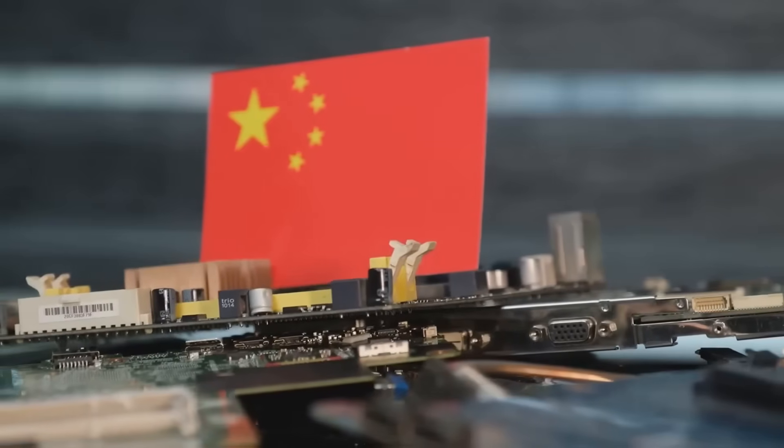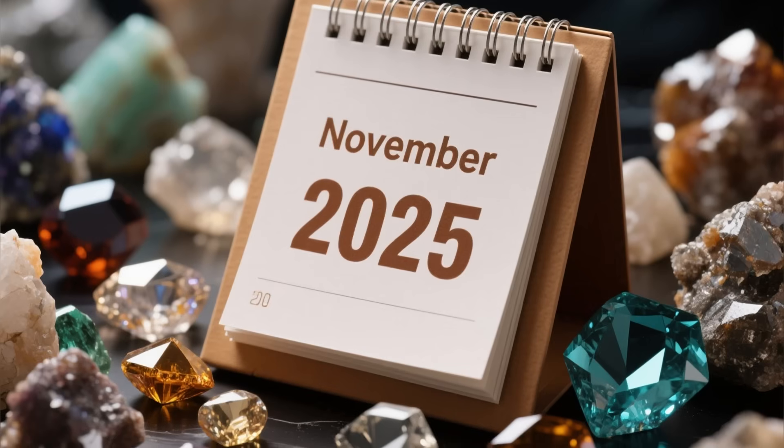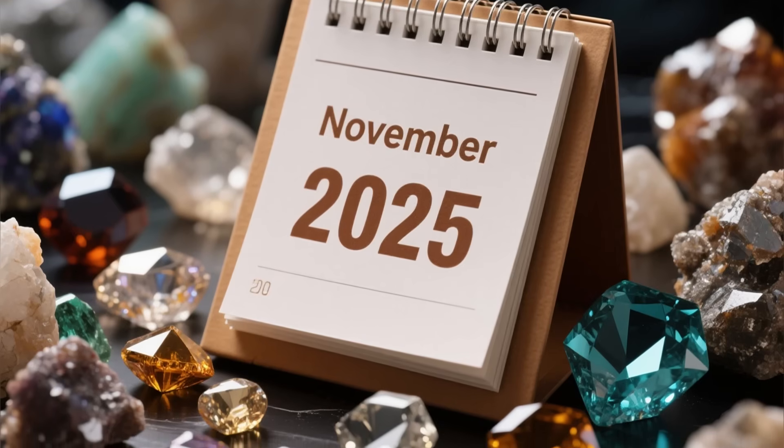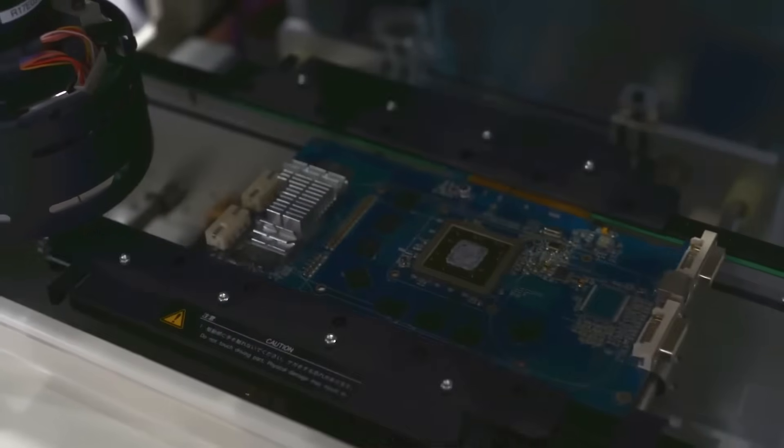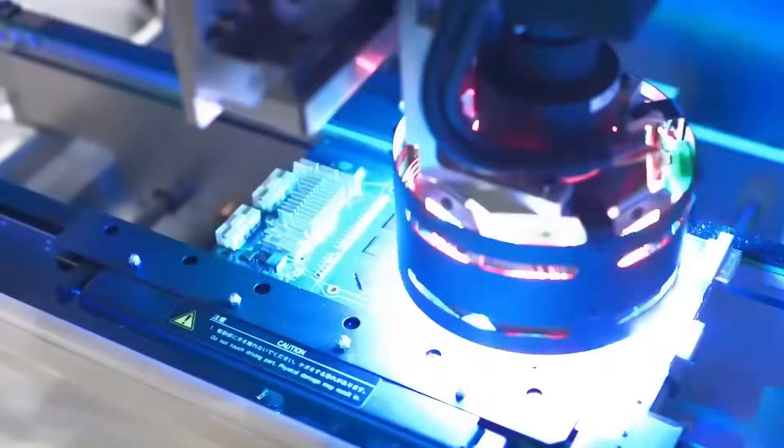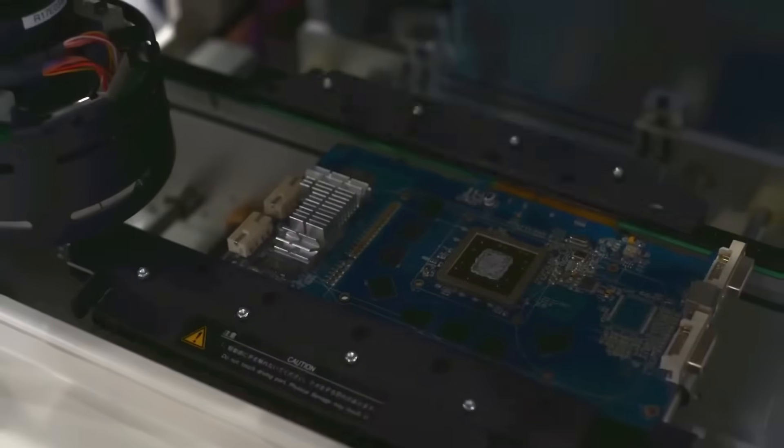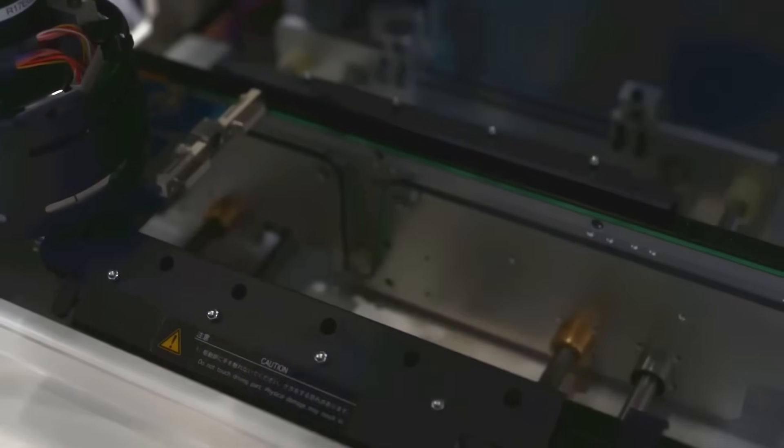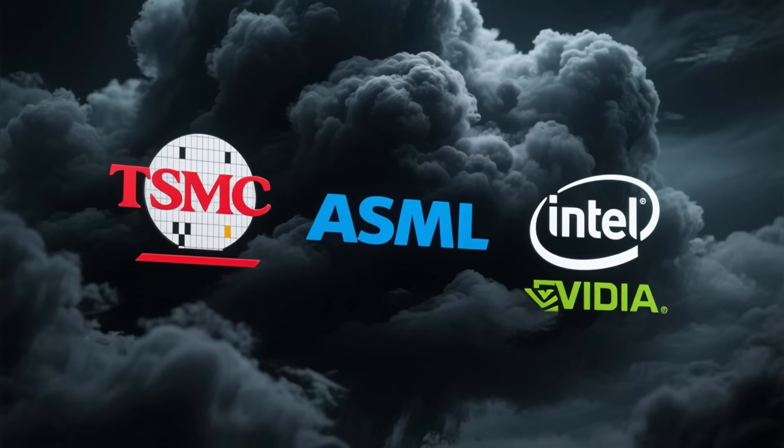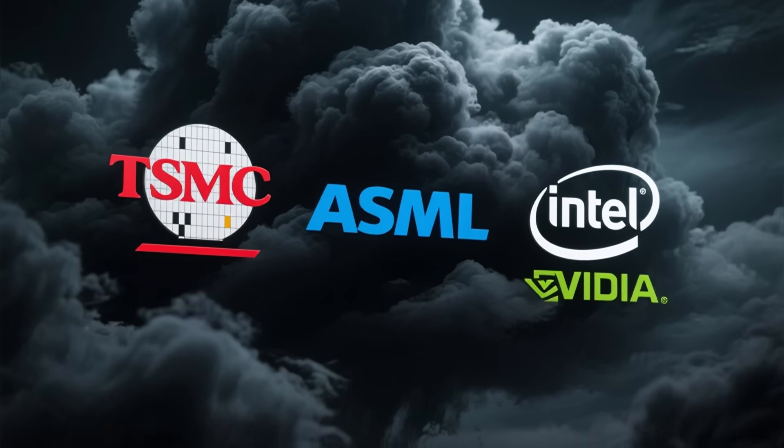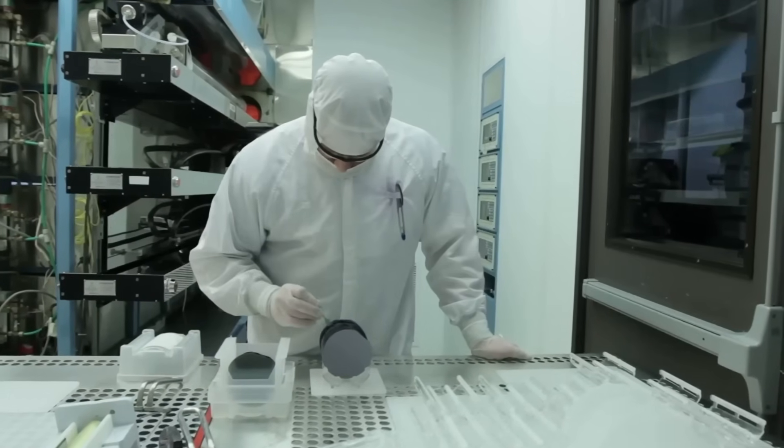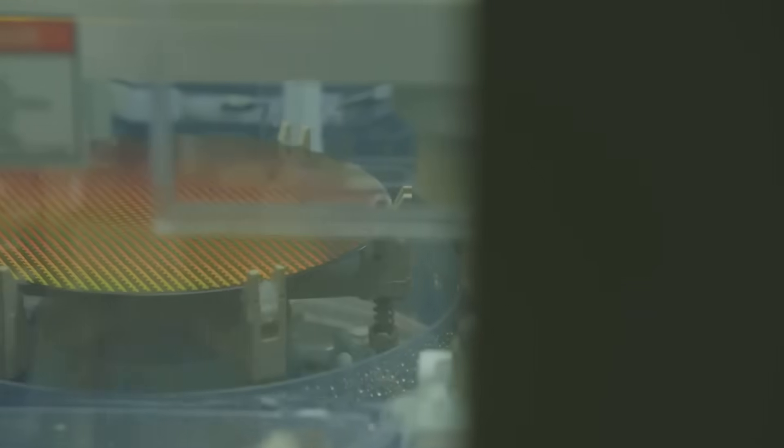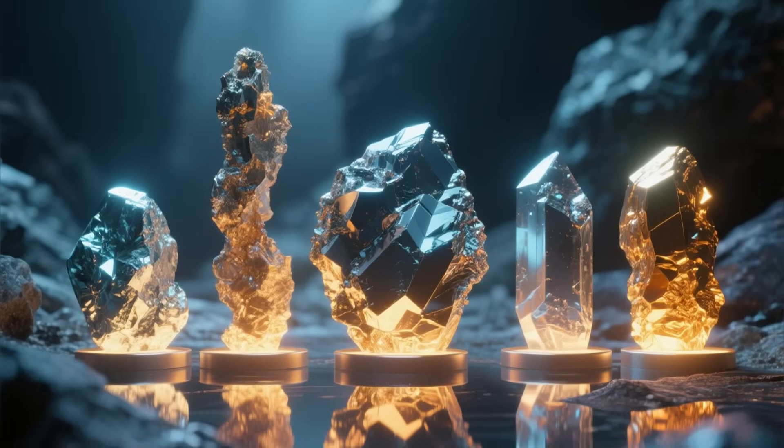China has now responded with their own technological weapon. Starting November 2025, sweeping new controls over rare earth minerals took effect. Any company worldwide using Chinese rare earths to produce semiconductors at 14 nanometers or smaller now needs explicit permission from Beijing. This affects industry giants like TSMC, ASML, Intel, and NVIDIA directly. China produces 353 kilotons of rare earth elements annually and controls the entire supply chain from mining to processing to manufacturing.